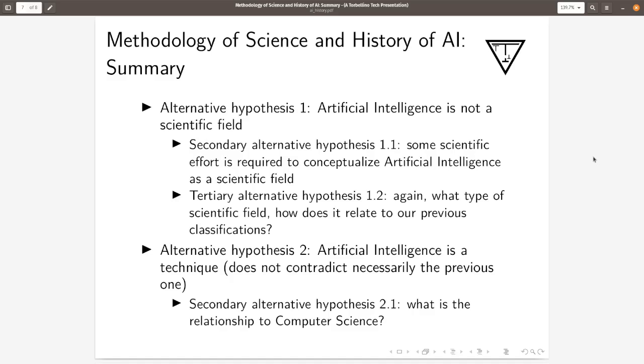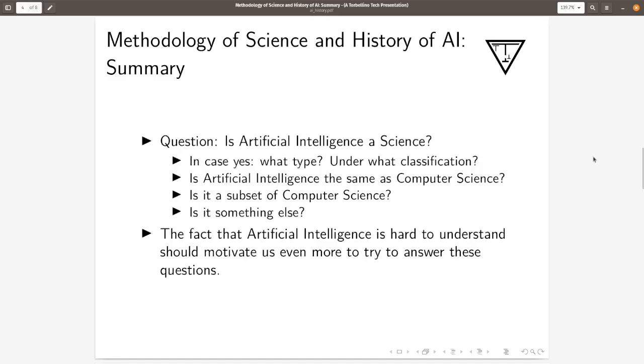Alternative hypothesis two is artificial intelligence is a technique, which does not necessarily contradict the previous one. But it might contradict the hypothesis that artificial intelligence is a science.